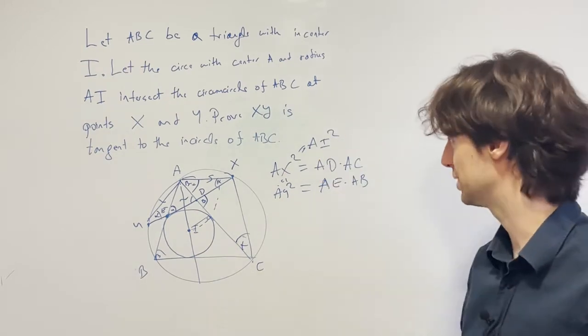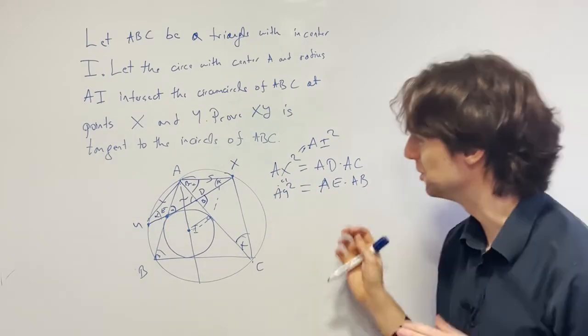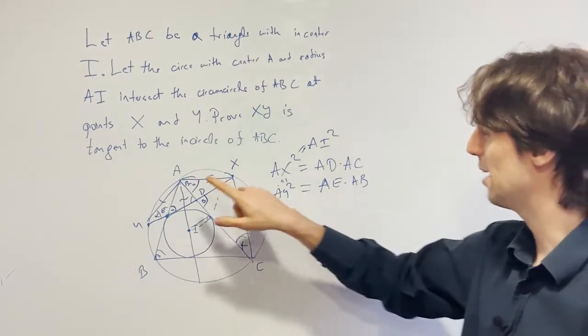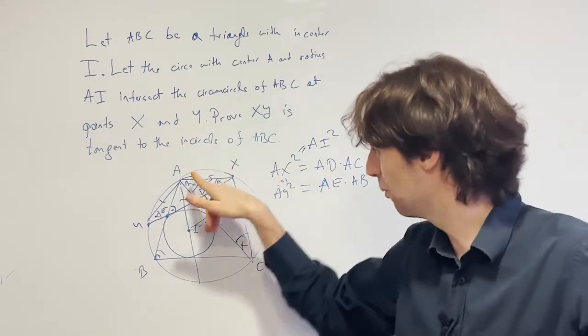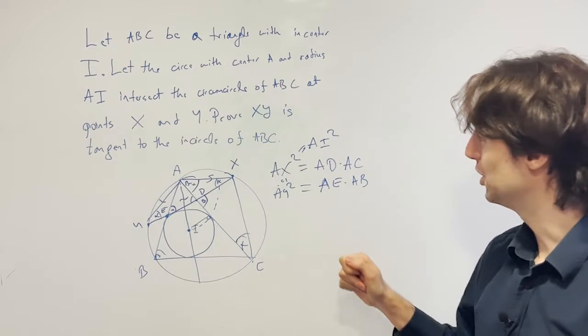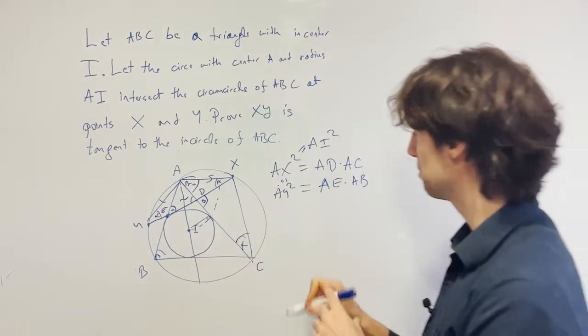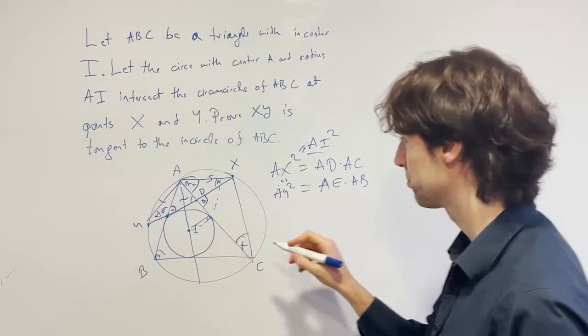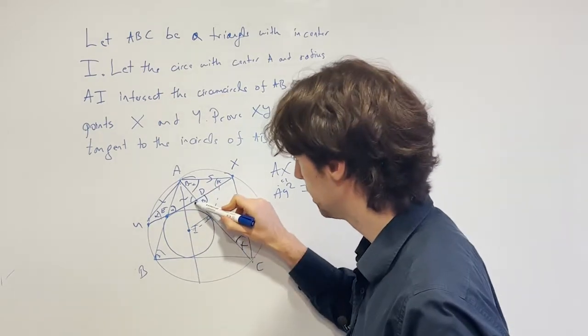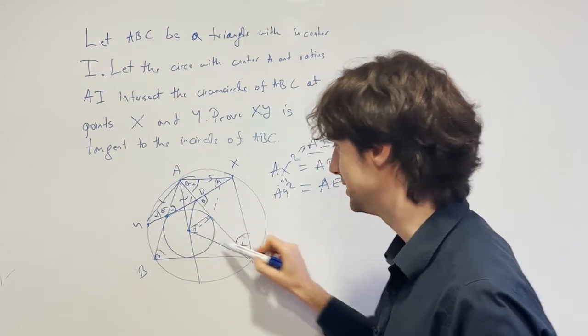But we haven't used the fact that AX and AY are equal to AI. So AX squared is AI squared. And now, this is somewhat commonly used in problems. When you have a tangency and another point here, such that this is equal to this, like this tangency thing, you can then get some new angles from here. And what do we get from here? Well, we get that AI squared is AD times AC. So that means that AI is tangent to the circumcircle around DIC.